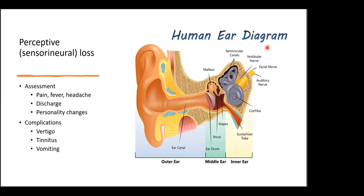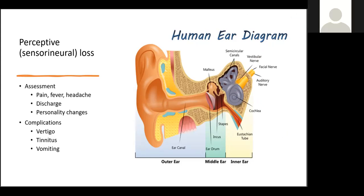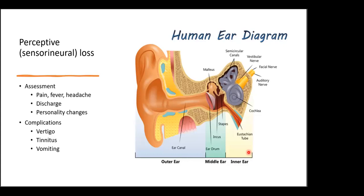Sensorineural hearing loss is primarily due to disorder of the auditory nerve. Major causes include congenital factors — for example, if the mother is exposed to communicable diseases. Infection is a primary cause. Some drugs are ototoxic and can cause hearing loss. Trauma to the inner ear can also cause this. Labyrinth disorders such as Meniere's disease — a disorder of the inner ear causing vertigo and hearing loss — can also result in sensorineural loss.